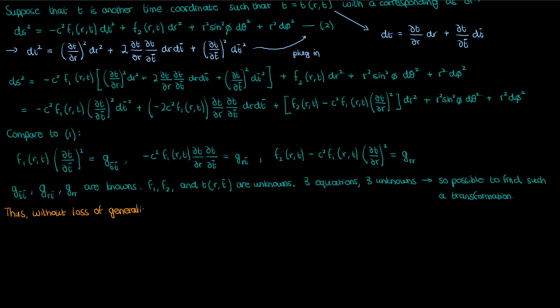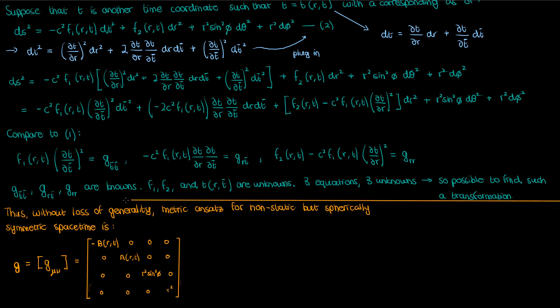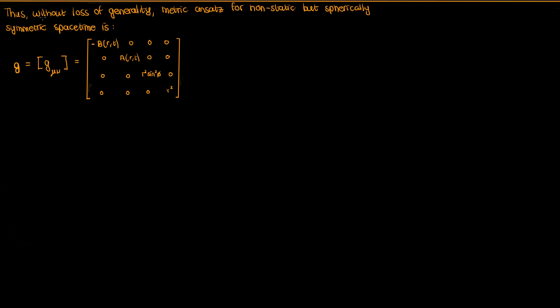So the ansatz for the metric tensor of a non-static but spherically symmetric spacetime is as follows. The RT off-diagonal component can be set to zero without loss of generality, because we can transform it away by choosing an appropriate coordinate time without changing any spatial coordinates. The other off-diagonal components are zero by spherical symmetry. So, just like the static Schwarzschild solution, we once again have a diagonal metric tensor as our ansatz, except that the unknown functions B and A now also depend on T.